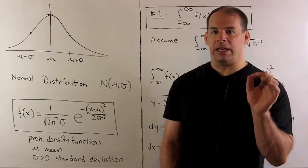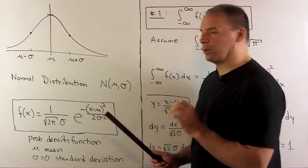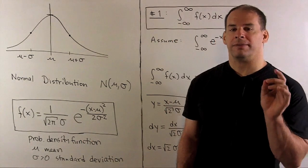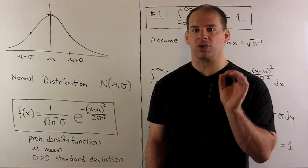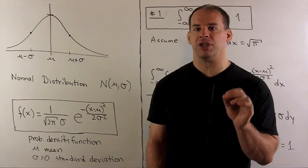We want to show that the integral over the real line is equal to 1. Next, we want to show that the mean for this distribution is equal to μ. Finally, we want to show that the variance is equal to σ². So our standard deviation is σ.